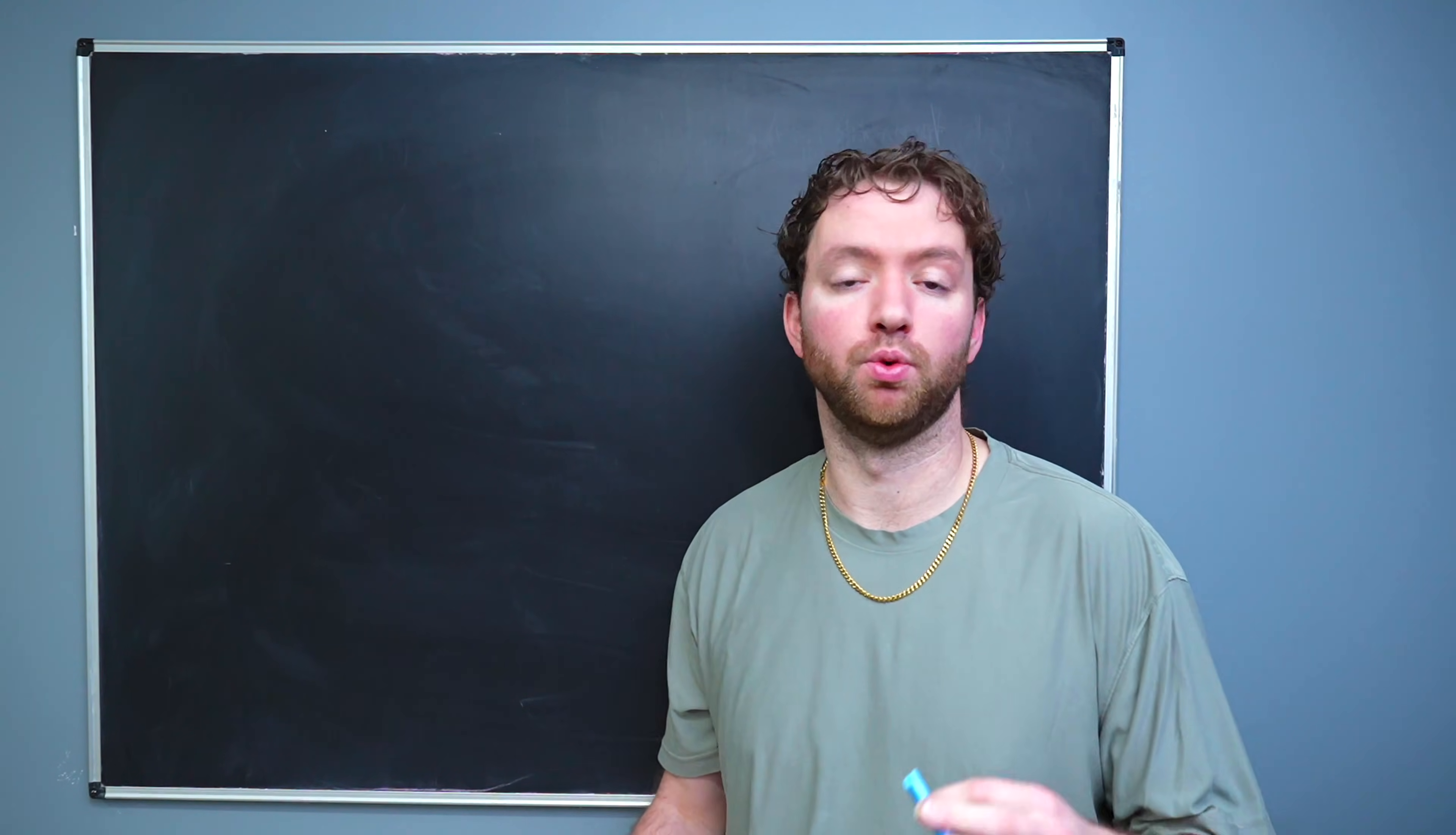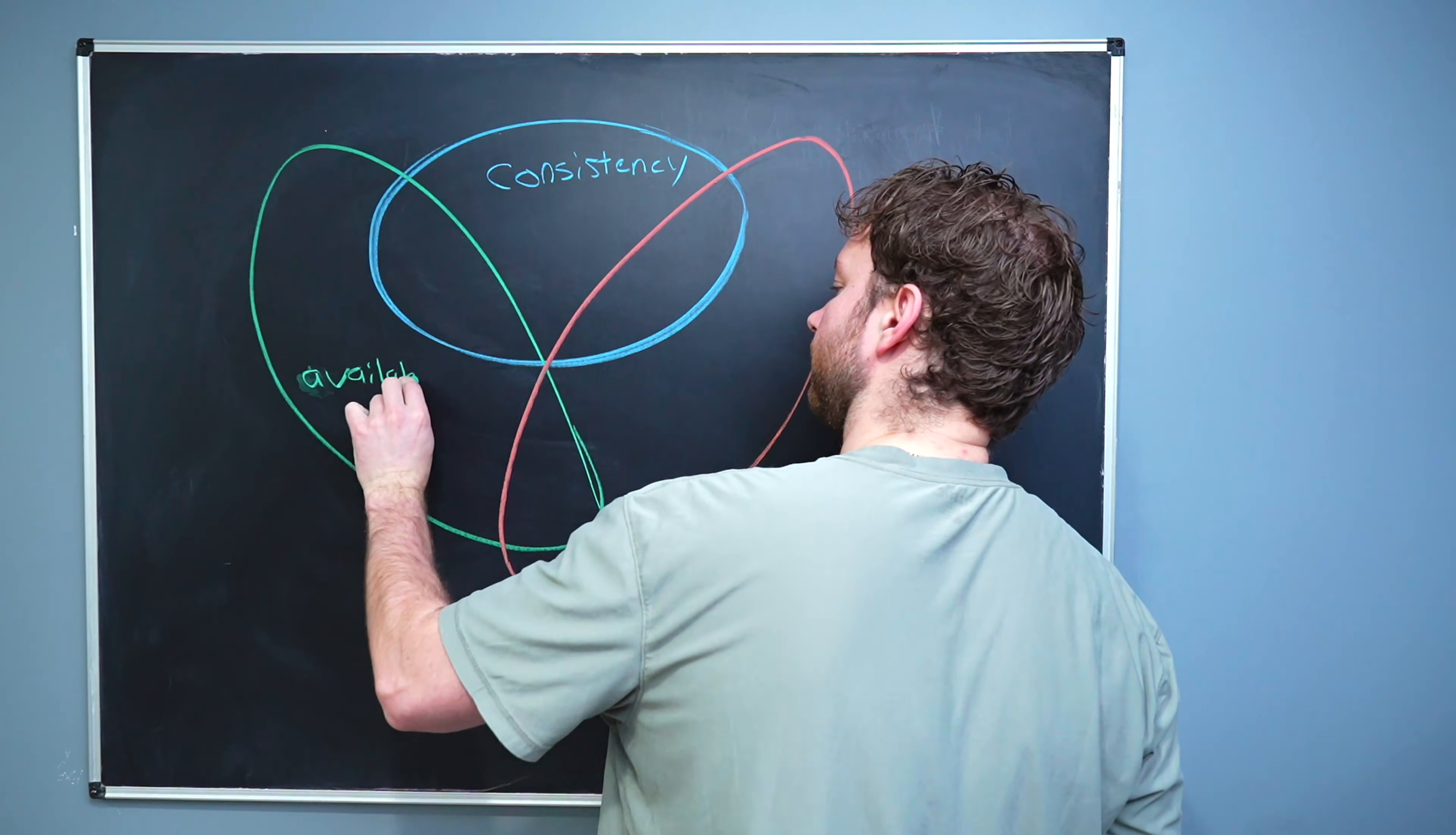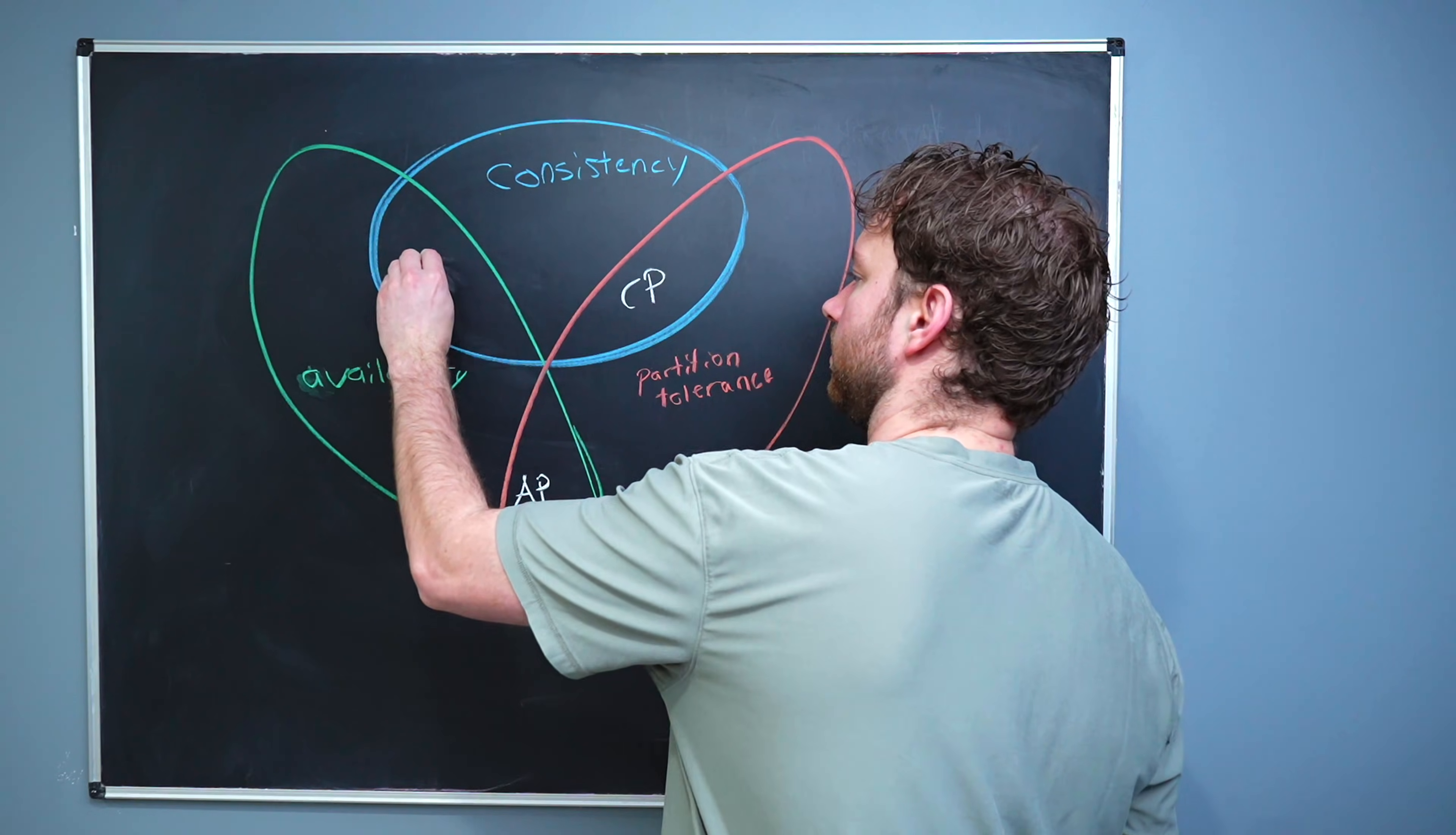So you'll often see the CAP theorem drawn out with three circles, and it looks something like this, where we have a circle here, a circle here, and a circle here. Now, my circles look like trash. But the idea is that this is consistency. This one's availability. And this one is partition tolerance. And when you have a database system, you will need to choose one of these overlapping sections, but you can't achieve all three. So this would be AP. This would be CP, or this one here, CA.